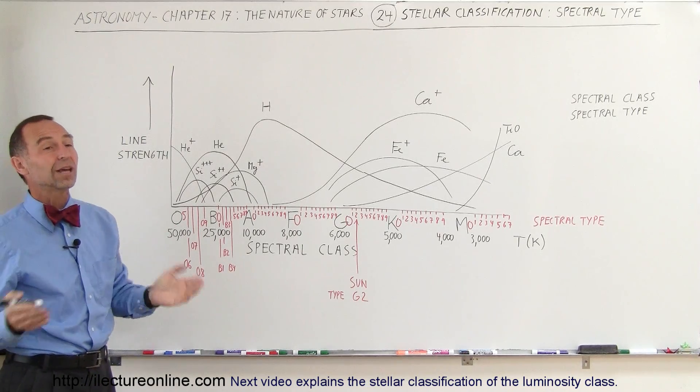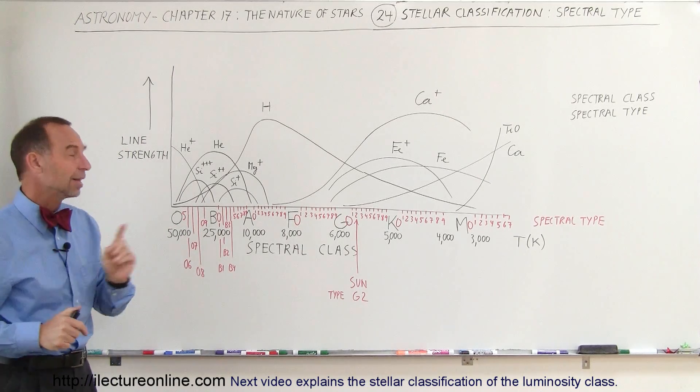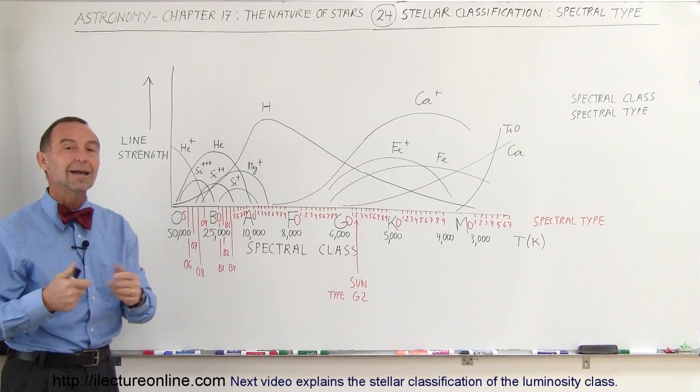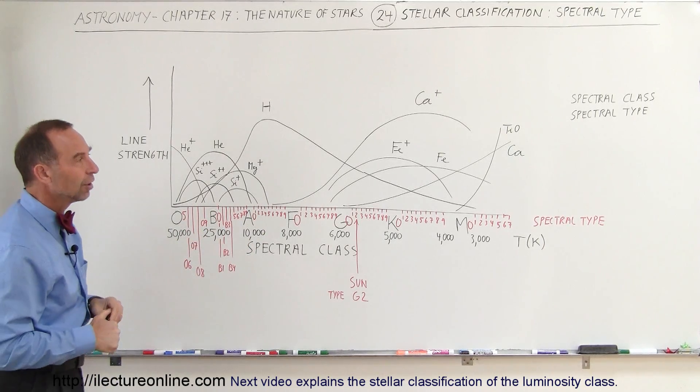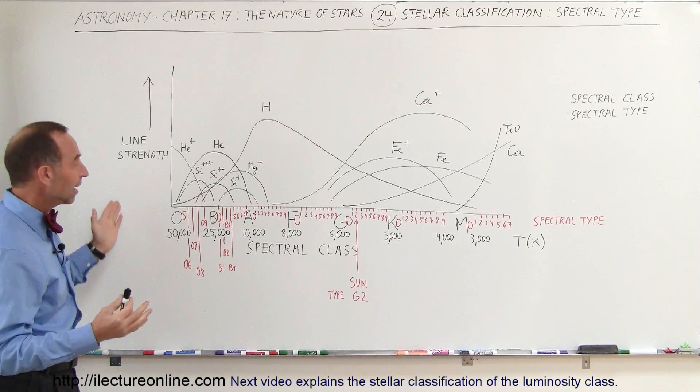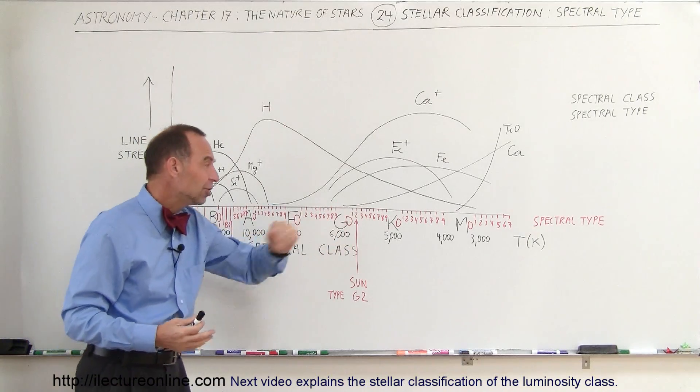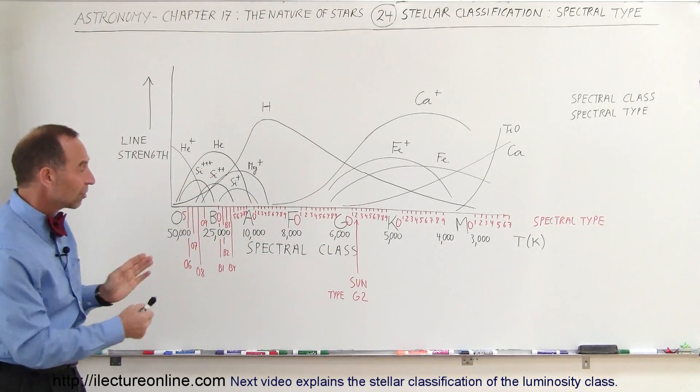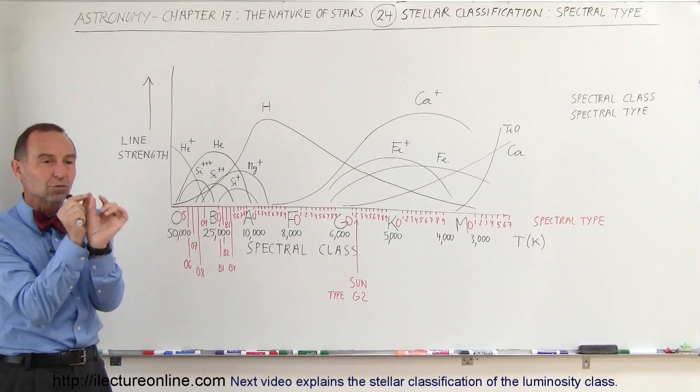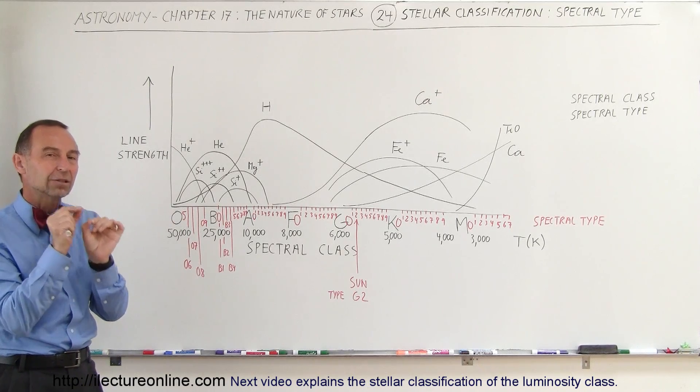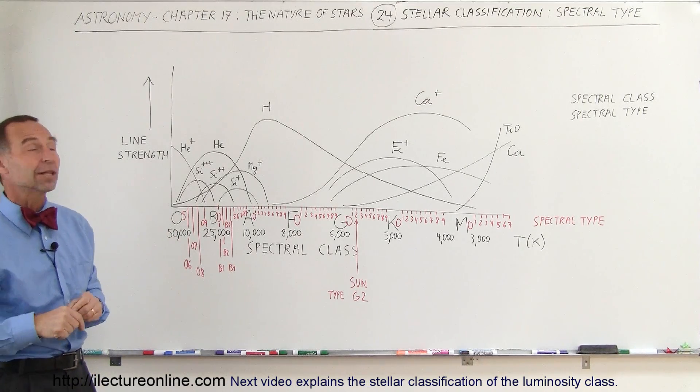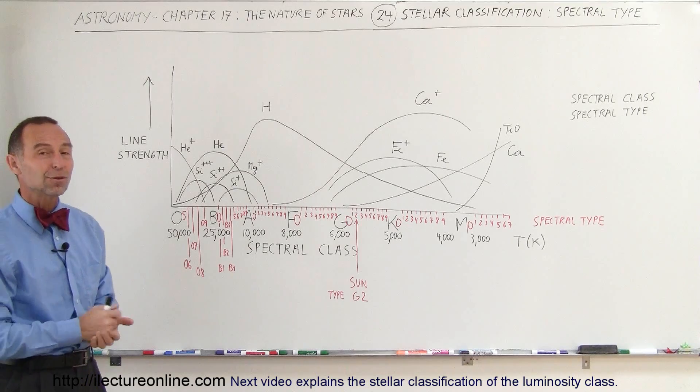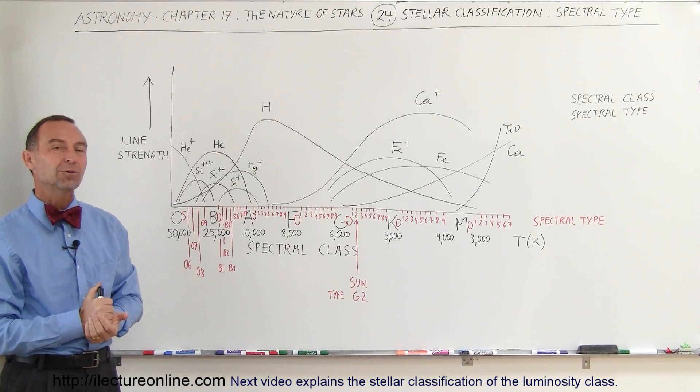And so we can see those differences, and therefore we have subdivided the classes in those particular types, which makes it easier to say, now I know exactly what star you're looking at, based upon the typing of the different classification. So, spectral class, we have the letters O, B, A, F, G, K, M, and the spectral type is a subdivision of those classes into smaller bands, where we can more accurately describe what type of star we're looking at. And that's the difference between the two, that's what we mean by spectral type.